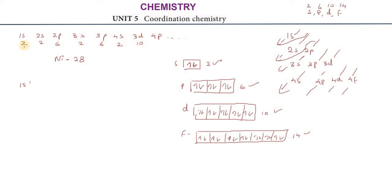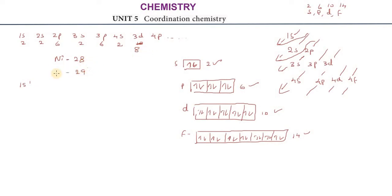2+2=4, 4+6=10, 10+2=12, 12+6=18, 18+2=20, 20+10=30. We have 30 electrons counted, and nickel has atomic number 28. So from 20 we add 8 more electrons, giving us 28 electrons.